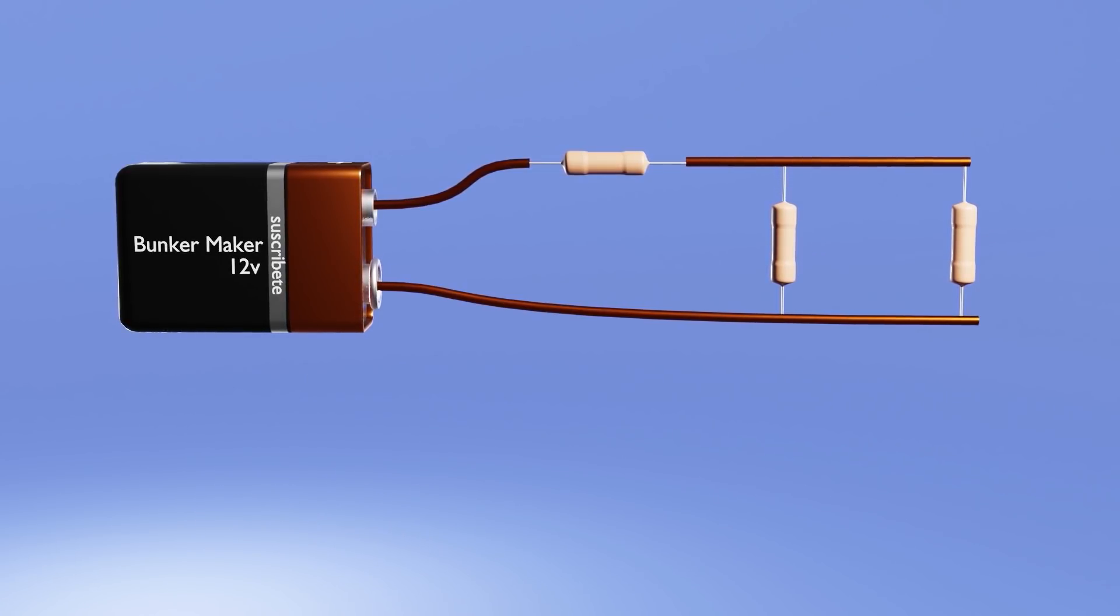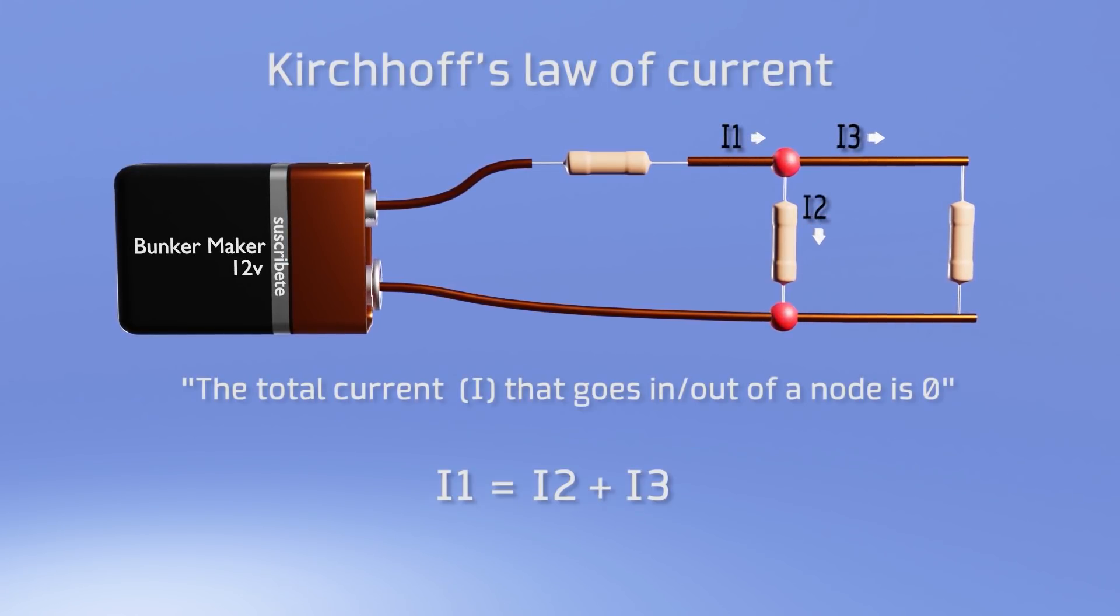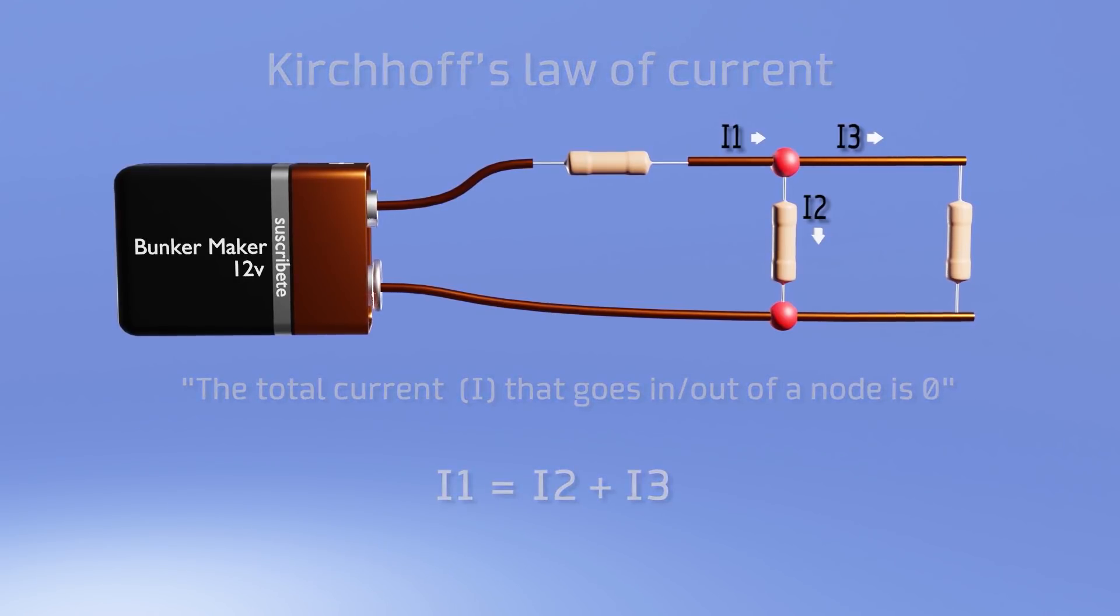The second is the Kirchhoff's current law, which tells us that in each node, that is to say, where there is more than one possible path for the current, the current that enters must be equal to the one that comes out.